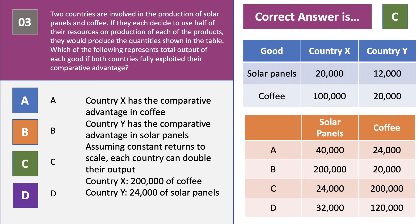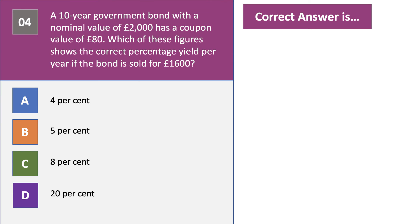Two more calculation questions to come. A 10-year government bond with a nominal value of 2,000 pounds has a coupon — the interest — of 80 pounds per year. Which of these figures shows the correct percentage yield per year if the bond is subsequently sold for 1,600 pounds? Press the pause button and have a go at question four.